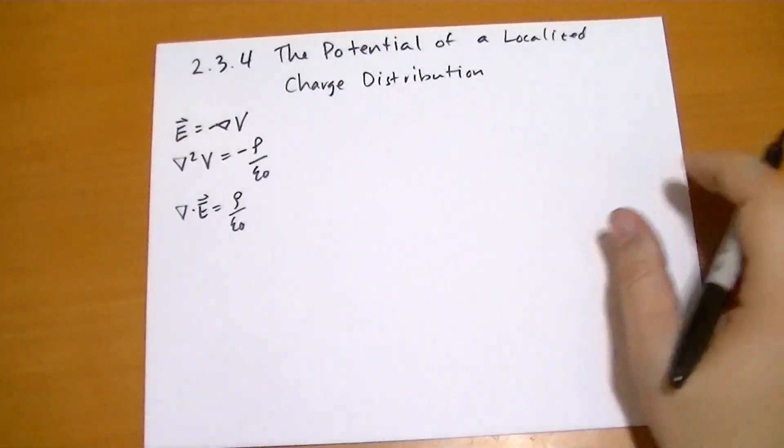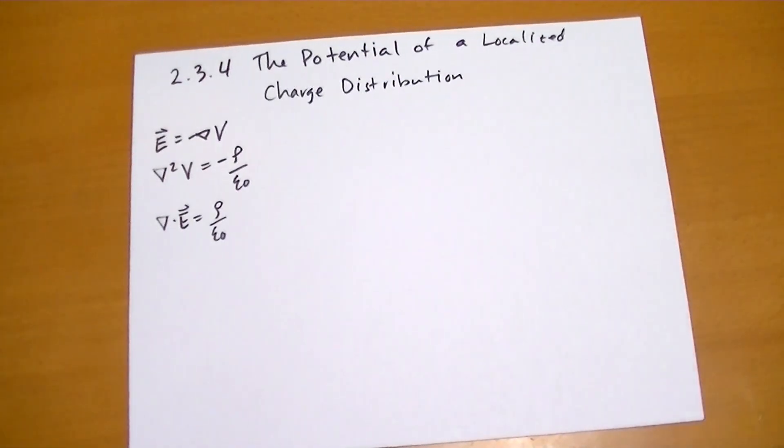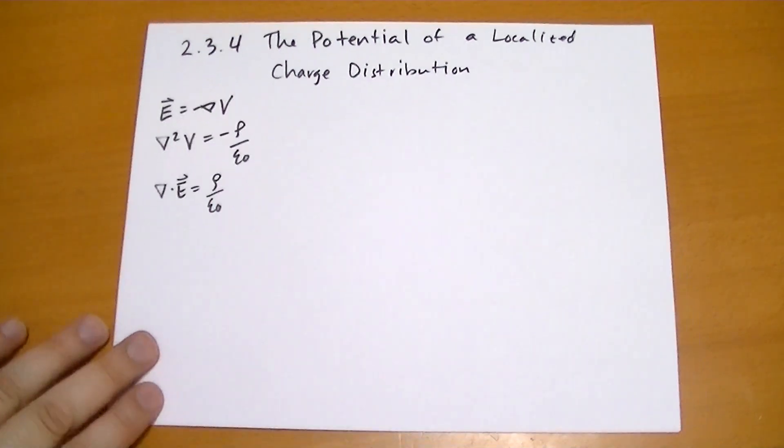So using these three equations together, the question is, if we know what the charge density is, how can we find out what the potential is? And once we know the potential, calculating the electric field should be rather trivial.